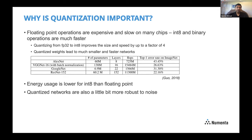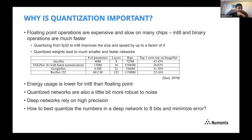Energy usage is also lower for integer than floating point, going along with smaller, faster, and fewer resources. Quantized networks could also be a bit more robust to noise, because you've bucketed the values and small perturbations are less likely to change the output. Some people have even used quantization as a technique for adversarial robustness. The key question is: how do you best quantize all these millions of numbers in a deep network to eight bits or lower, with minimal impact on error rate?